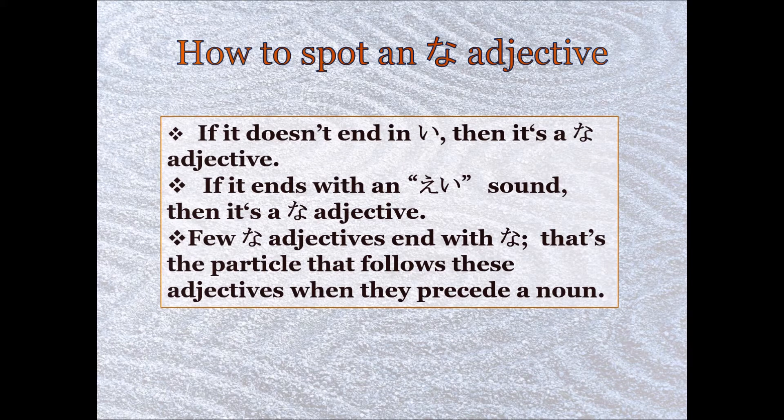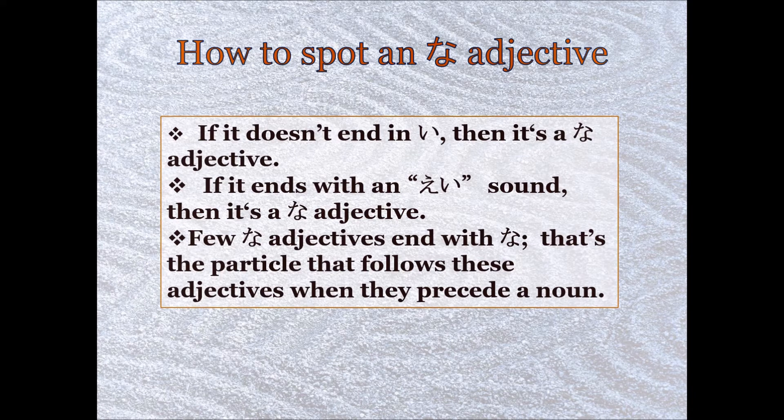If it doesn't end in i, then it's a na-adjective 99% of the time. There are some exceptions to the rule. The main exceptions are things that end with an i-sound, but are e-i on the end, like kirei, or burei, or shitsurei. Those are all na-adjectives.